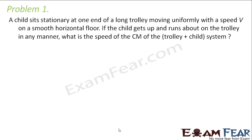The first problem states: a child sits stationary on one end of a long trolley moving uniformly with a speed v on a smooth horizontal floor. So the child is sitting stationary. The trolley is moving with speed v on the horizontal floor and there is no friction because it is considered to be a smooth surface.